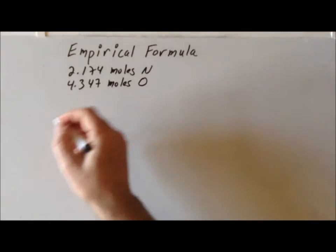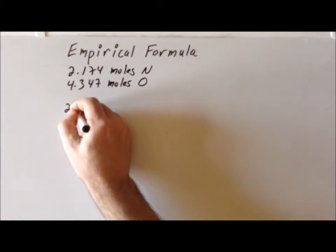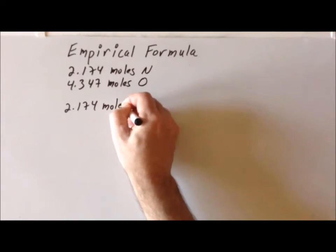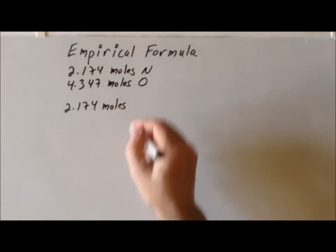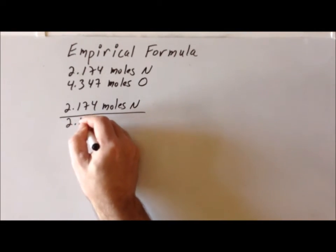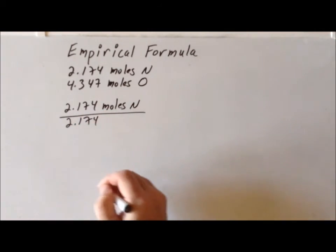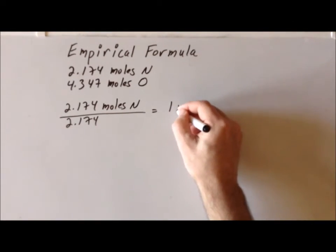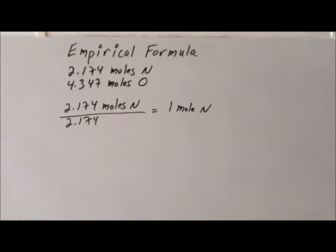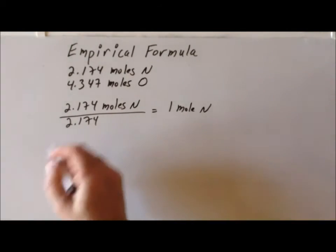So in this particular case for nitrogen, it is somewhat trivial because we are going to take the 2.174 moles of nitrogen and simply divide them by 2.174. And once we do that, we get one mole of nitrogen. Immediately, that looks pretty trivial, but that is an essential step of the solution.